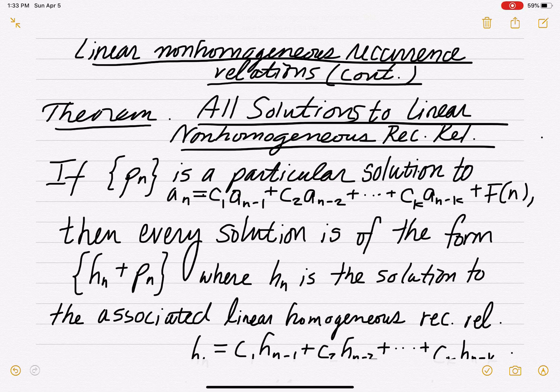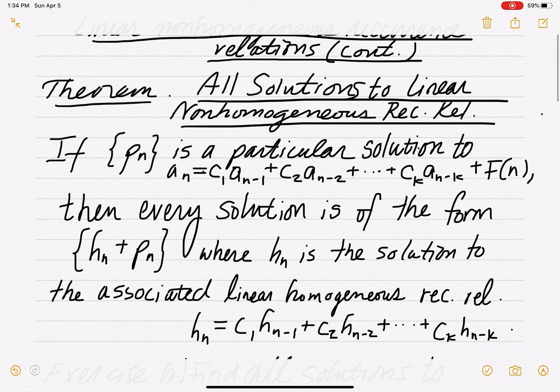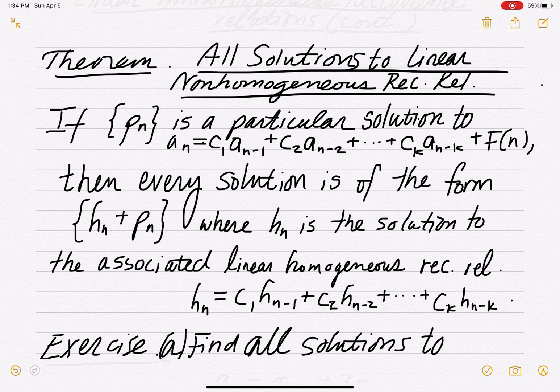We'd like to be able to solve non-homogeneous types of recurrence relations. We have a result that allows us to find all solutions to a non-homogeneous recurrence relation. If you have a particular solution pn to a non-homogeneous recurrence relation, then every solution takes the form hn plus pn. Here, hn is the solution to the associated homogeneous recurrence relation, and pn is the particular solution to the non-homogeneous part.